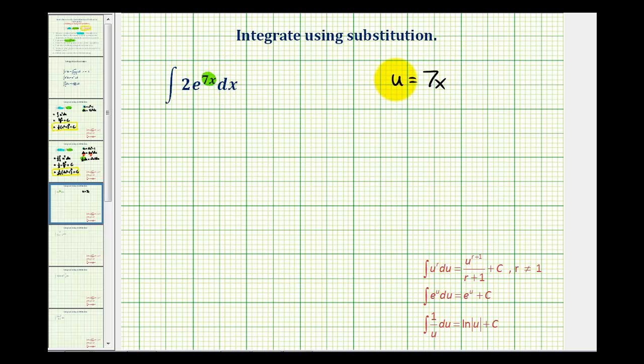So 7x is equal to u. And now we'll determine differential u. Differential u is equal to 7dx.